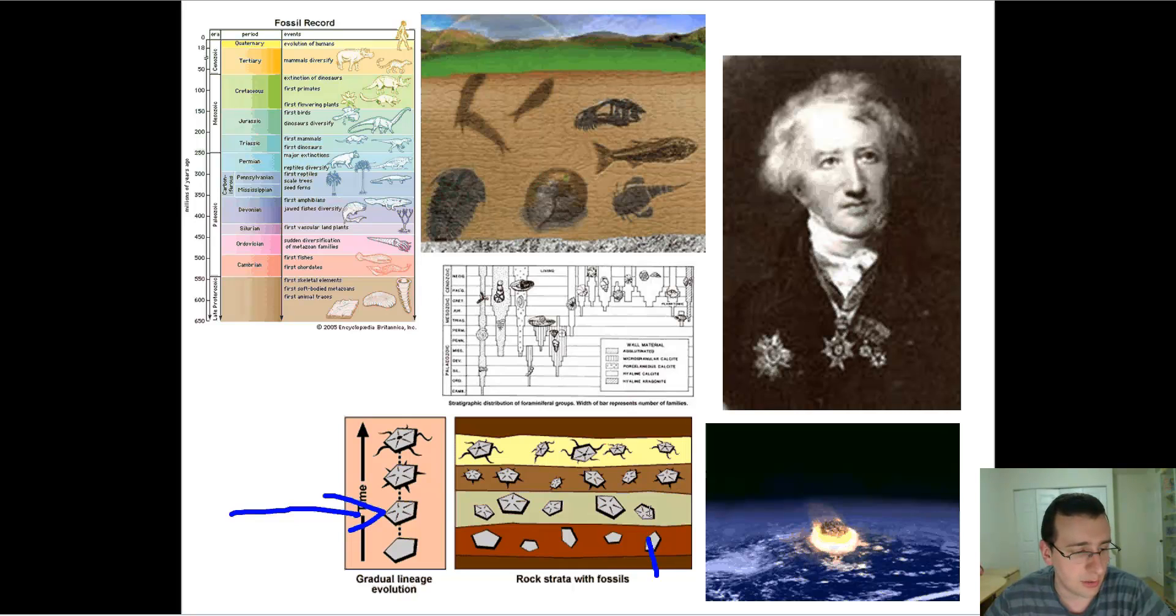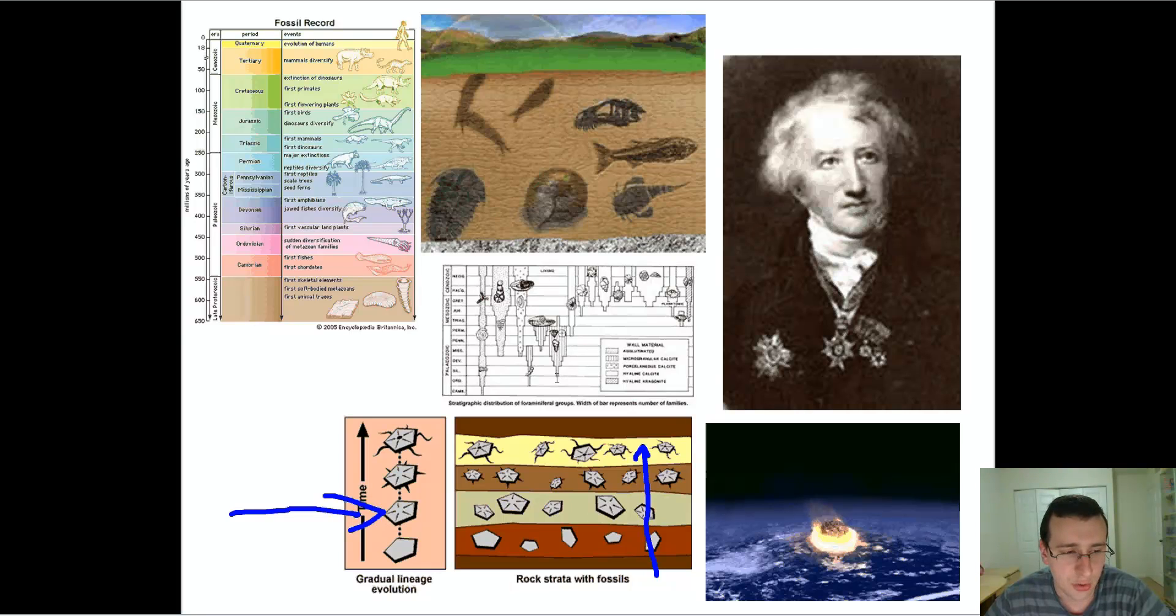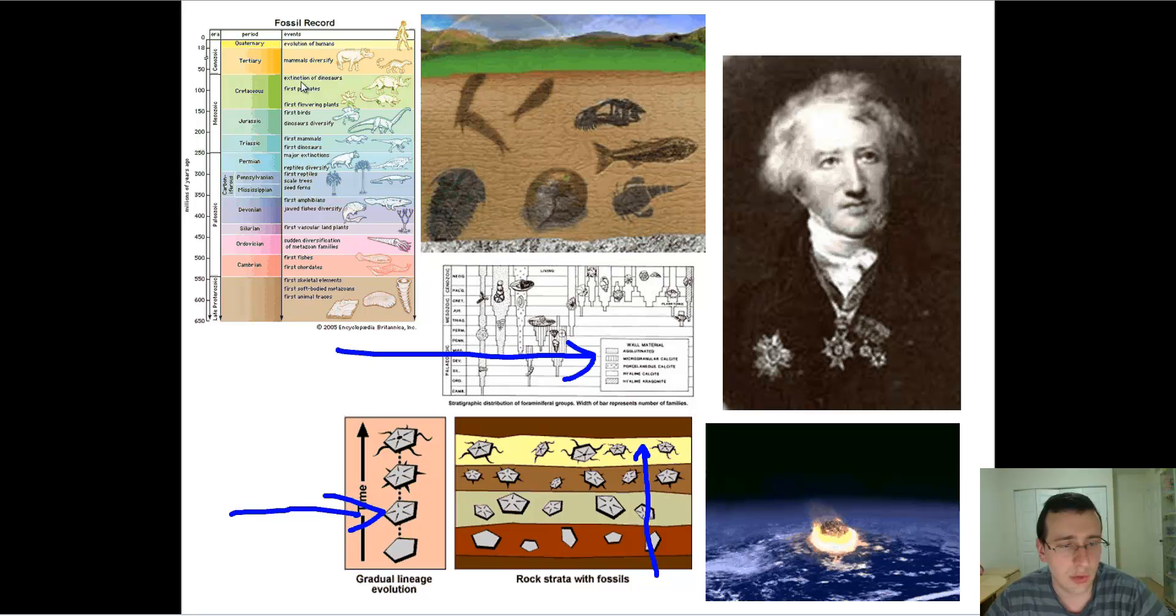For example, this is a good example right here, a gradual lineage of evolution. He noticed things like that, that as you go higher and higher the animals change over time, and as you go throughout time you see new kinds of animals showing up.